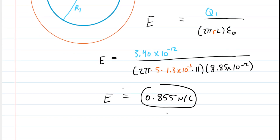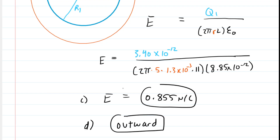The magnitude is 0.855 newtons per coulomb — that's the correct answer to part C. For part D, since the electric field is positive, the electric field vectors are pointing radially outward at this location. That is the correct answer to part D.